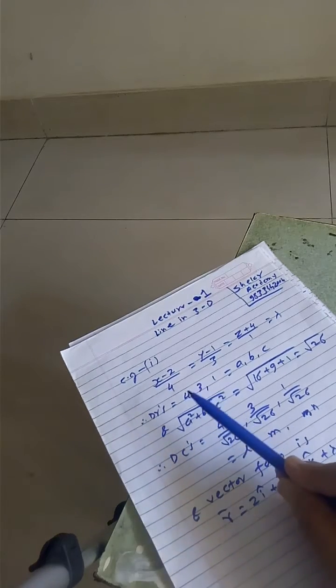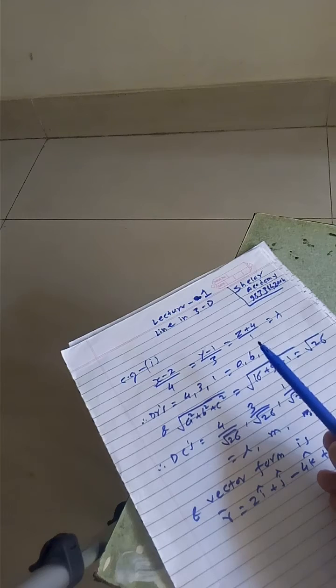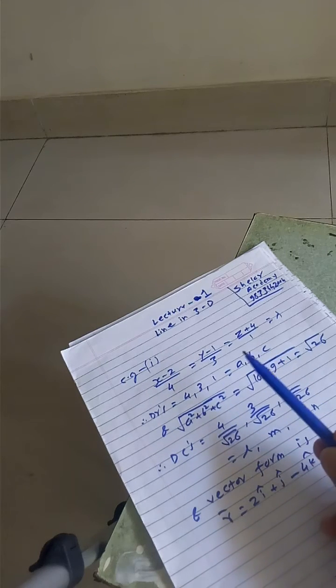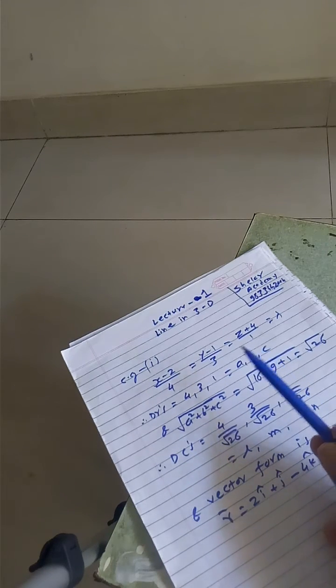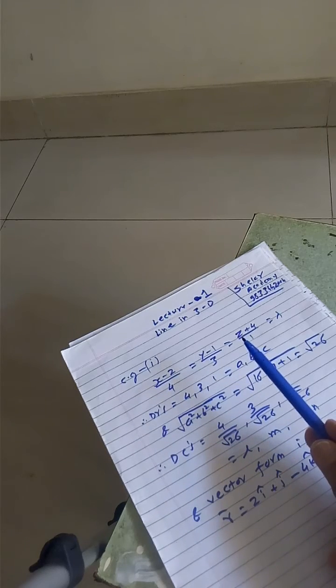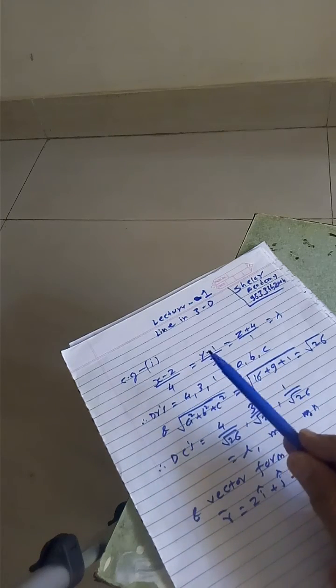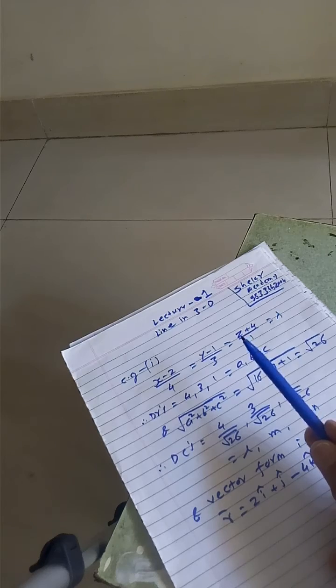Now direction ratios are 4, 3 and 1 from the denominator. These are the direction ratios if and only if X, Y and Z are the first terms in the numerator and X, Y, Z coefficient should be...